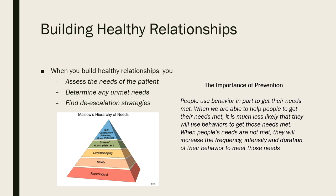Level four is achievement — this is when one can finally relax and have a little bit of fun. And then level five is self-actualization. So just like Maslow says, when we're building those healthy relationships, we have to assess the needs of that patient. What are any unmet needs? Determine those, and then make sure we're finding any de-escalation strategies so that we're not escalating our patients so they are able to get those needs met.